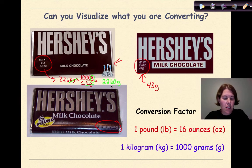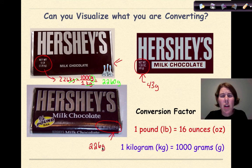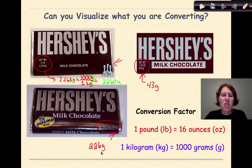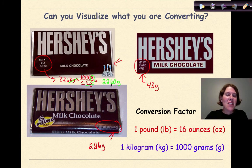The half-pound bar is already given as 226 grams, which is still hard to visualize, but I could say that's larger than your common everyday bar of chocolate. So 43 grams? That sounds like a great idea. 226 grams? Man, I've got to be in a bad mood. And five pounds of chocolate? That's just apocalyptic.